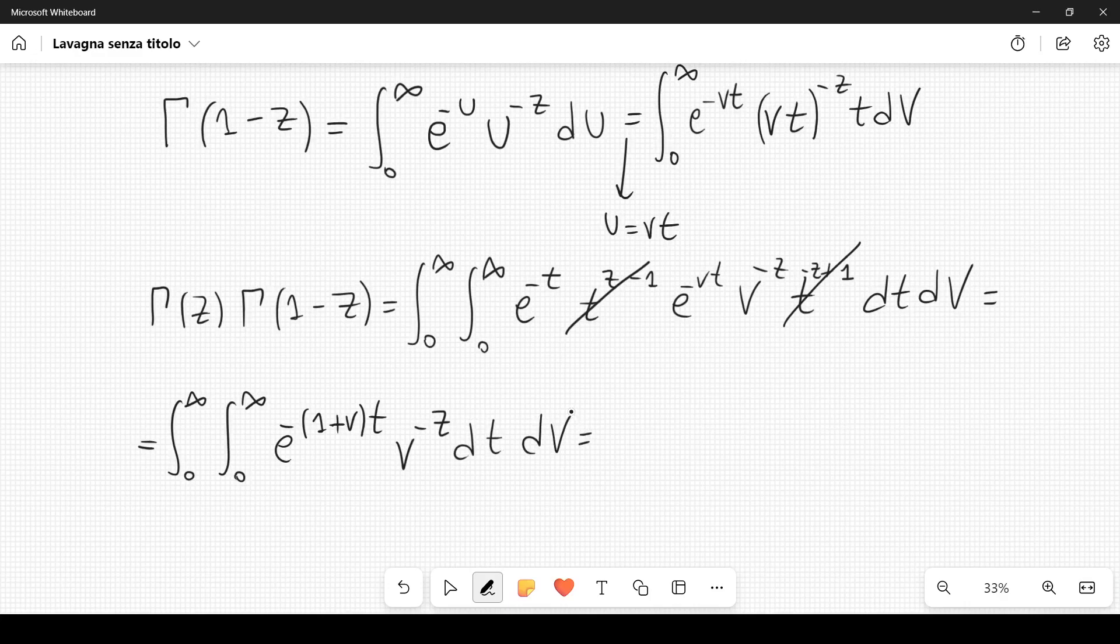Now we can integrate over t, so we are left with only the integral over v. v to the minus z can be factored out, and the integral is e to the minus (1 plus v) t divided by minus (1 plus v), and we have to evaluate it between t equal to 0 and t equal to infinity. You have to think that this is a limit, so t goes to infinity here.